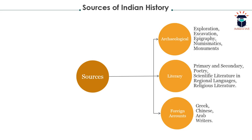Literary sources cover primary and secondary sources. You must understand the distinction between them, their uses, and their limitations. Literary sources also include poetry, scientific literature, regional language texts, and religious literature. Foreign accounts are travelogues or accounts of people who stayed at imperial courts — for example, Greek accounts, Chinese accounts, and Arab writers' accounts.